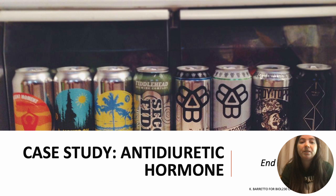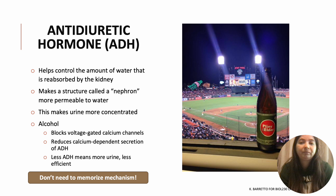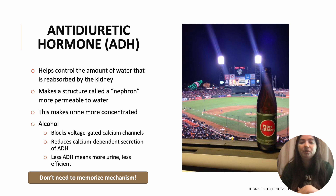We're also going to talk about a hormone called antidiuretic hormone (ADH). What it does, how it affects excretion, and what causes changes in it. ADH helps control the amount of water that is reabsorbed into your kidneys. What it does specifically is it makes the nephrons more permeable to water, so more water doesn't get wasted and doesn't get sent into your waste system — it gets taken back into the body and reused.